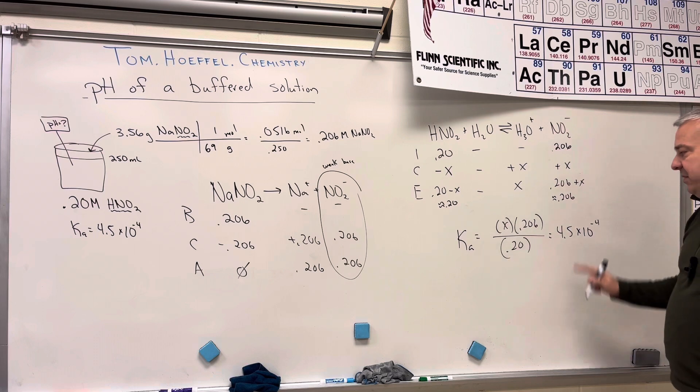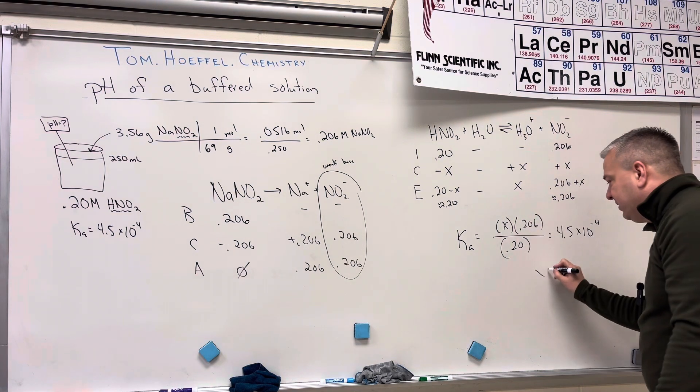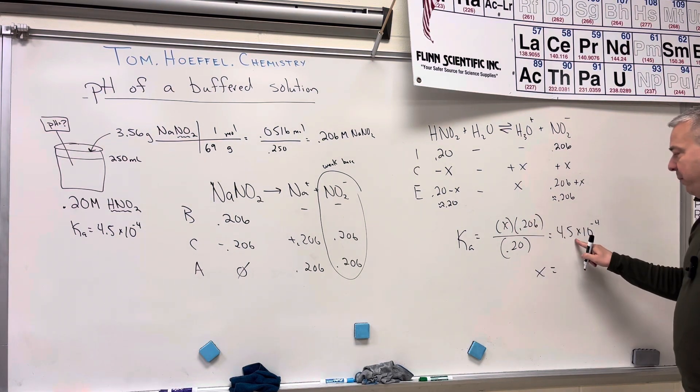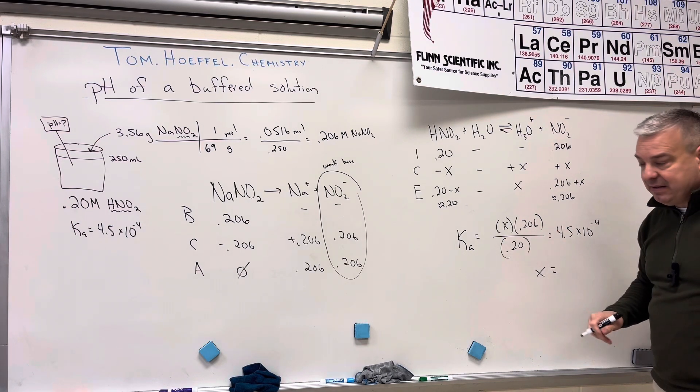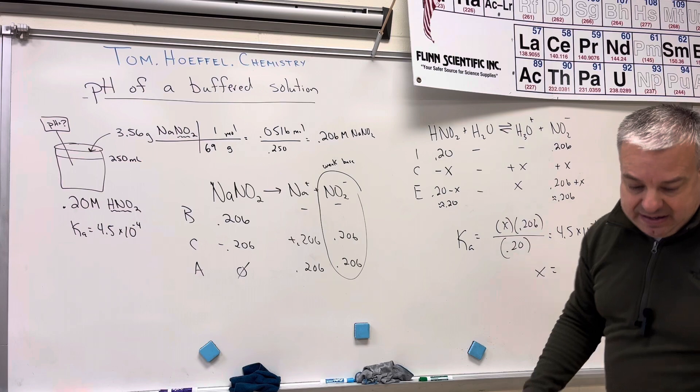And what I'm going to do is I'm going to do some cross multiplication to solve for X. So 4.5 times 10 to the negative 4 times this number divided by this number is going to give me my X value.